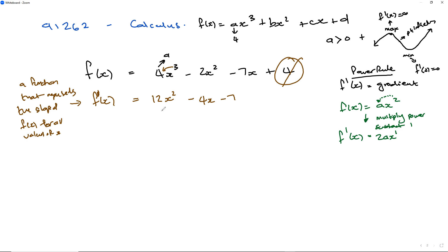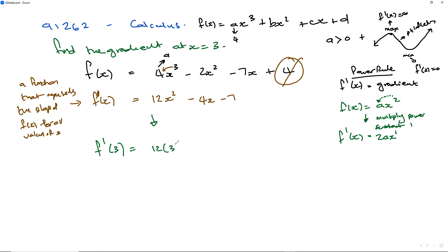The next question is: now that I've got the gradient function, let's find the gradient at a certain point. I can substitute x values into this function and find the gradient at specific points. Let's say I'm asked to find the gradient at x equals 3. All I have to do is replace x with 3 in the derivative. 3 squared is 9, 9 times 12 is 108, minus 12, minus 7, comes to 89. So 89 is the gradient of this function at that point.